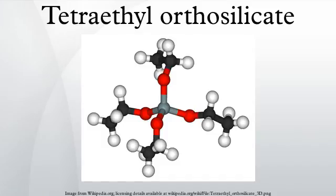Tetraethyl orthosilicate is the chemical compound with the formula Si(OC2H5)4, often abbreviated TEOS. It is a colorless liquid that degrades in water. TEOS is the ethyl ester of orthosilicic acid, Si(OH)4. It is a prototypical alkoxide.